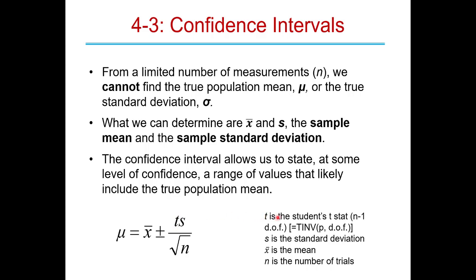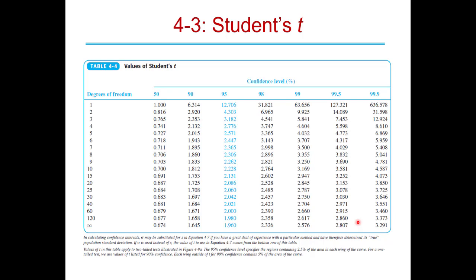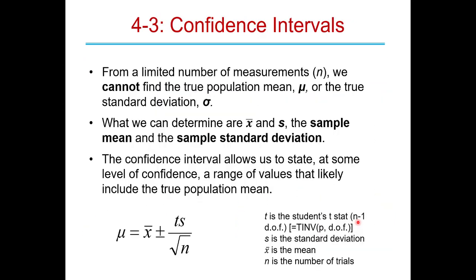We calculate confidence intervals using this formula: T is the Student's T statistic from the table or calculated in Excel; S is the sample standard deviation; and we divide by the square root of N, where N is the number of trials. This gives the bracket on our mean value, within which the true value mu lies to within our confidence level.